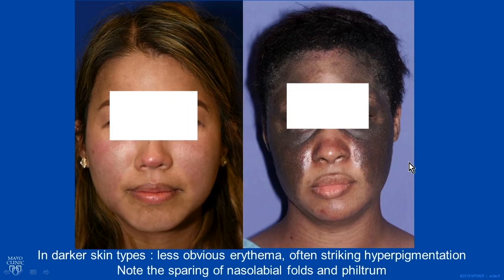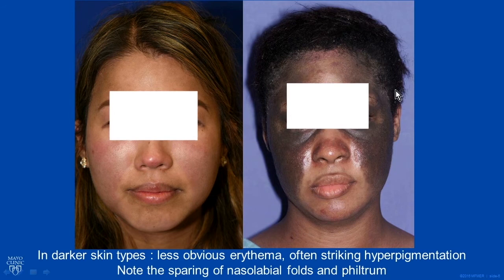This is an example in patients of color, and you can see that sharp margination here. You'll see in patients of color that the erythema is often significantly diminished. Especially in African-American patients with chronic inflammation, they'll get post-inflammatory hyperpigmentation and these deeply pigmented patches. But again, you see this characteristic distribution.